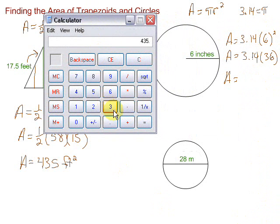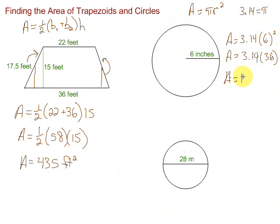Then, finally, we multiply 3.14 times 36. 3.14 times 36 equals 113.04. And we have the label, which is inches, and we're talking about area, so it's going to be inches squared, so it would be 113.04 inch squares that would fill that circle.